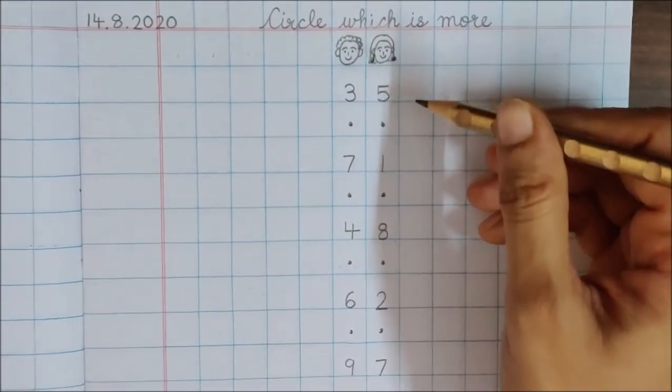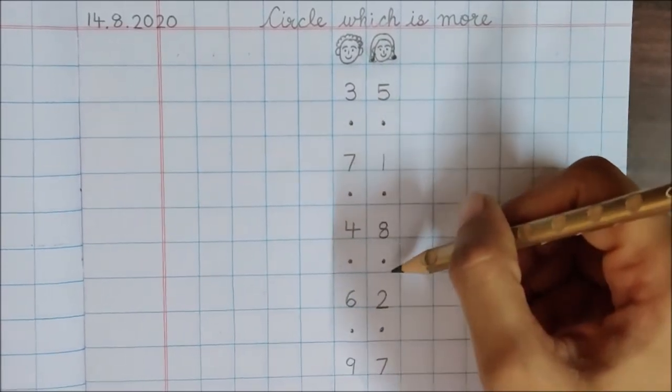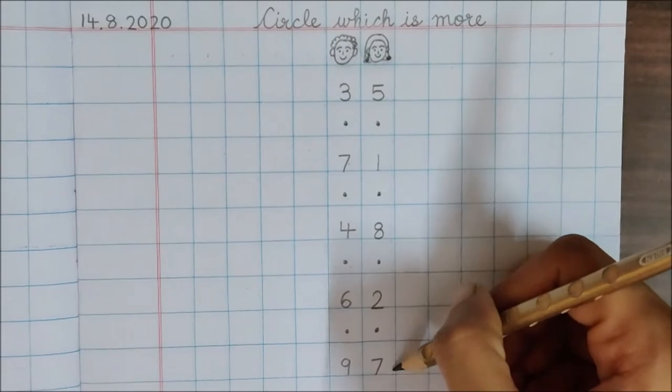Let us check the numbers again. 5 dot, 1 dot, 8 dot, 2 dot, 7.